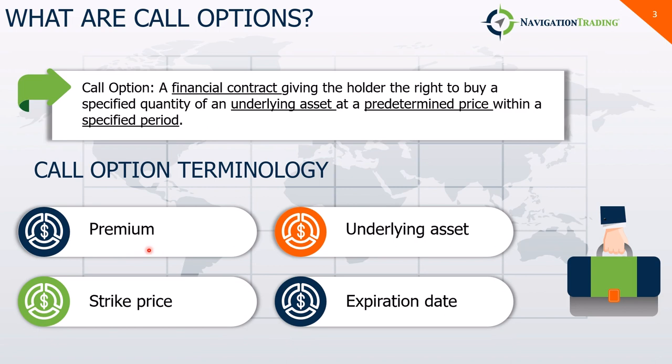The premium is influenced by a number of factors: the underlying asset's current price, its past price movements, the volatility of the equity or stock, and the time to expiration. The underlying asset is the financial instrument or security on which the stock option's value is based — it could be stocks, commodities, futures, or indices.